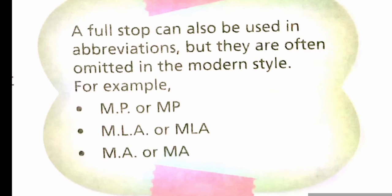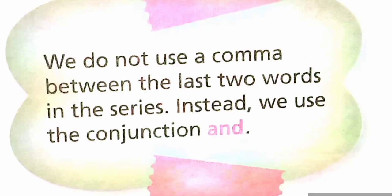A full stop can also be used in abbreviations, but they are often omitted in the modern style. For example: MP or MP, MLA or MLA, MA or MA. We do not use a comma between the last two words in a series. Instead, we use the conjunction AND.